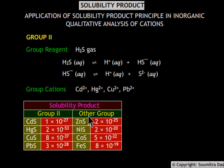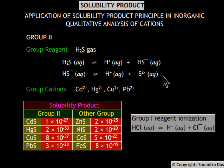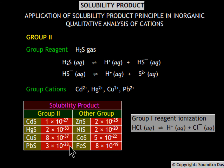In Group 2, the reagent is H₂S. The filtrate from Group 1 analysis is acidic because HCl was the Group 1 reagent. The acidic pH means higher H⁺ ion concentration, which shifts the H₂S ionization equilibrium to the left due to the common ion effect. Thus, the sulfide ion concentration decreases greatly; however, it is still enough to exceed the solubility product of Group 2 cation sulfides, which then precipitate. The sulfides of other group cations have a higher solubility product and do not precipitate.